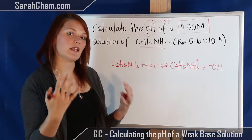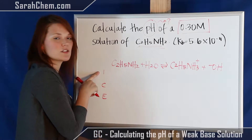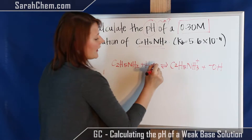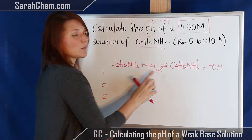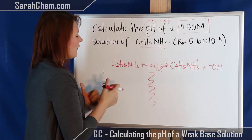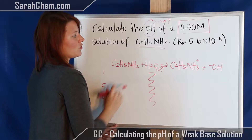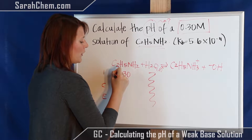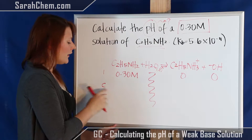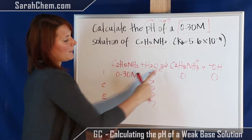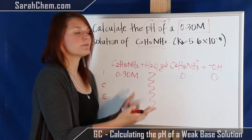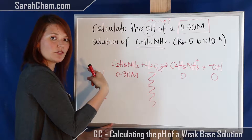That's the reaction happening in our solution. Next we build out the ICE, where I stands for initial concentration, C is for the change in concentration, and E is the equilibrium concentration. When dealing with equilibrium and K values, liquids or solids are not part of the calculation, which means we don't care about water in these ICE charts. Initially, the only thing put into solution is C2H5NH2, so we put in a value of 0.30 molar. The products haven't formed yet, so we have zero for those. For the change row, we have to determine which direction equilibrium shifts — because we have nothing on the products side, we can't move in the reverse direction, so we have to go forward.